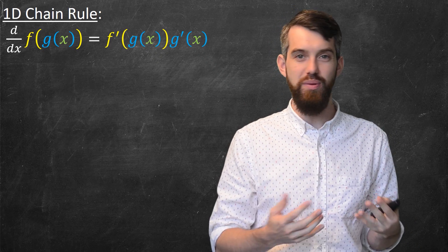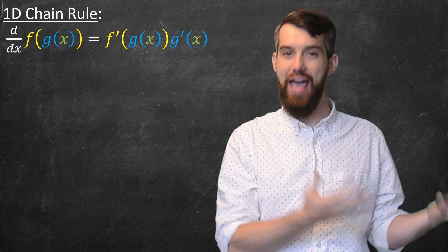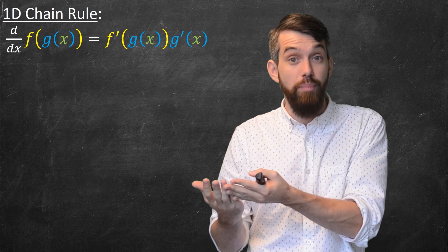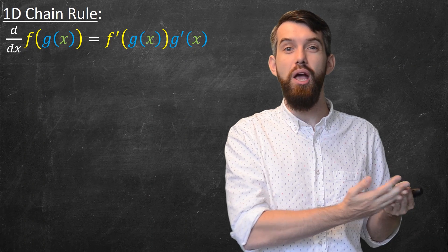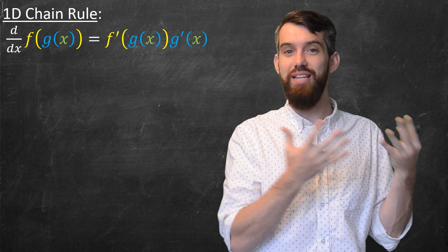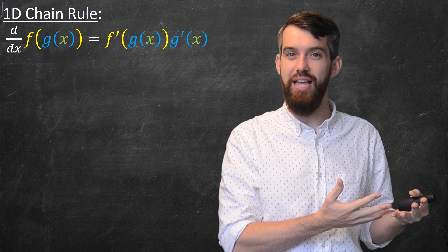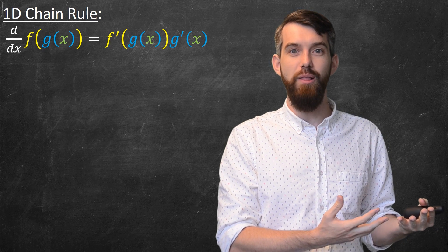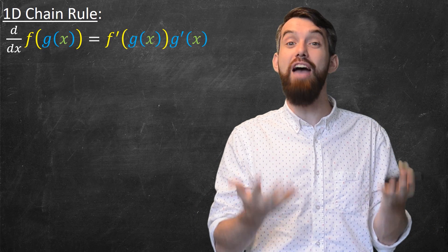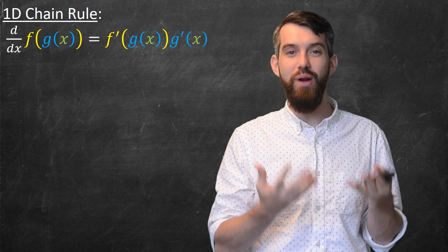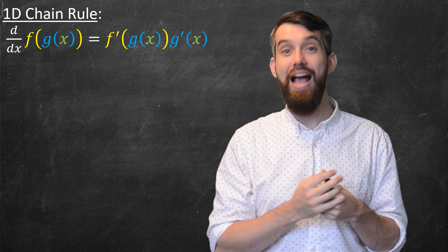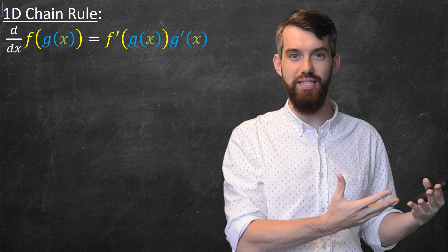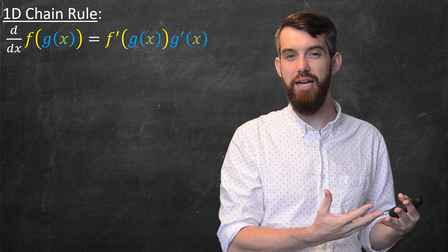I imagine a composition f of g of x, and both of those functions f and g were functions with a single input and a single output. Then what the chain rule would say back in calculus 1 days was that the derivative of this composition was the derivative of the outside, f prime, evaluated at the inside g, and then multiplied by the derivative of the inside, g prime of x.